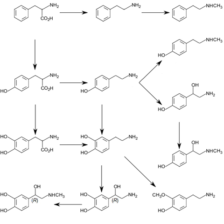In neurons in which epinephrine is the transmitter, a third enzyme phenylethanolamine N-methyltransferase (PNMT) converts NE into epinephrine. Thus, a cell that uses epinephrine as its transmitter contains four enzymes: TH, AADC, DBH, and PNMT, whereas NE neurons contain only three enzymes lacking PNMT, and DA cells only two, TH and AADC.